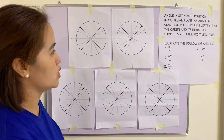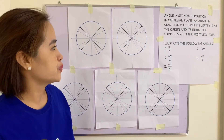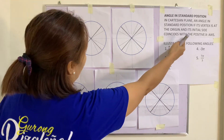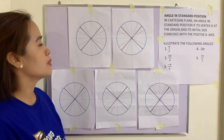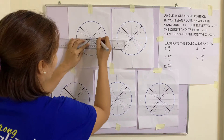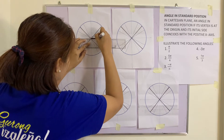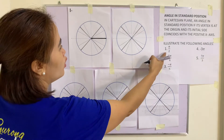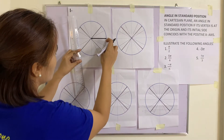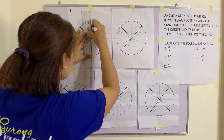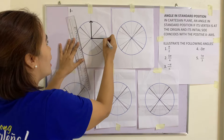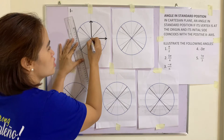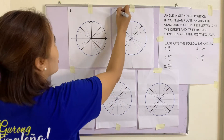Let us illustrate using example number one: π/2. The initial side is the positive x-axis, and the angle is π/2. This is π/2 in standard position.